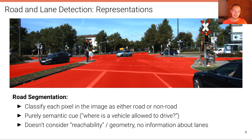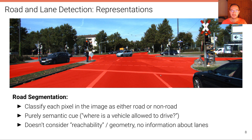Semantic segmentation does not consider reachability — it does a per-pixel classification without considering geometry, so it doesn't capture that some pixels may be harder to reach from the vehicle's current position. There's also no information about lanes in naive road segmentation: the entire road area is highlighted in red without making any distinction between the individual lanes.